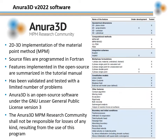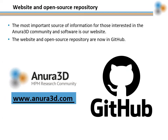The Anura3D source files are open source under the GNU Lesser General Public License version 3. The Anura3D MPM research community shall not be responsible for losses of any kind resulting from the use of this program. For those interested in the Anura3D software and the community, the most important source of information is our website, www.anura3d.com.